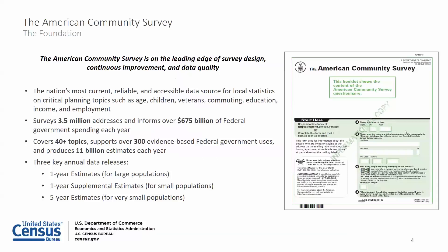The Census Bureau releases three different sets of data estimates in regard to the ACS each year in the form of one-year and five-year period data sets, as well as one-year supplemental estimates. These products will be discussed in more detail on an upcoming slide.